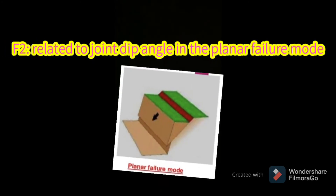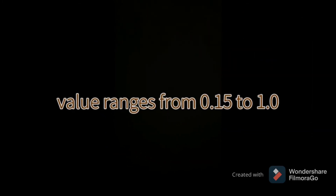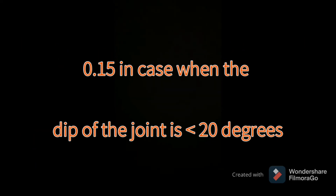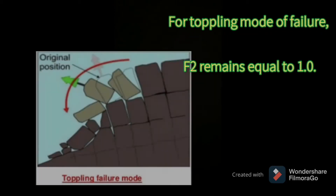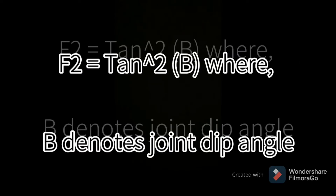Factor 2 is related to the joint dip angle in the planar failure mode. Its range is also 0.15 to 1.0. A value of 0.15 is when the dip of the joint is less than 20 degrees, and 1.0 is when the joint dips more than 45 degrees. For toppling mode of failure, Factor 2 remains equal to 1.0.